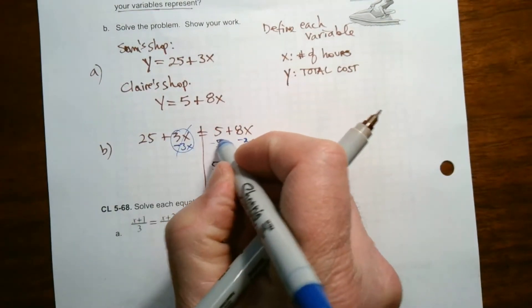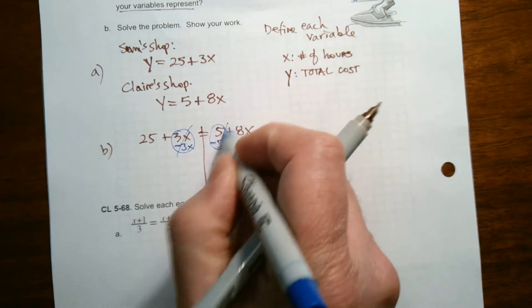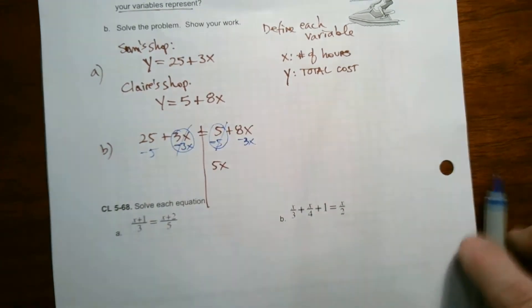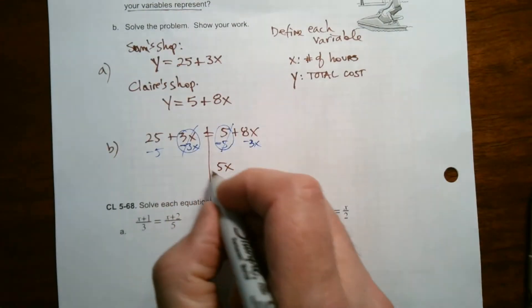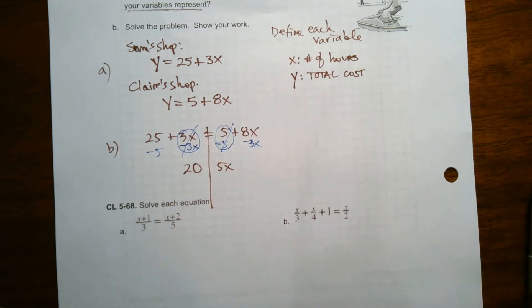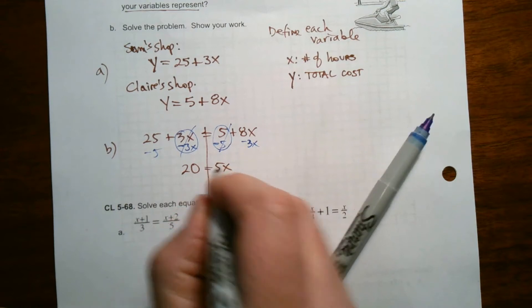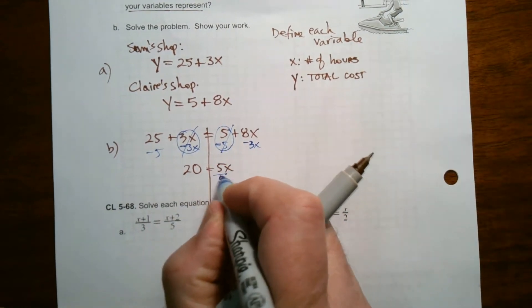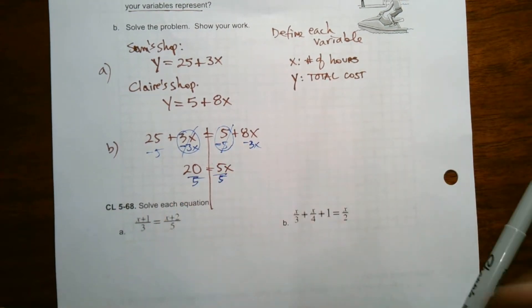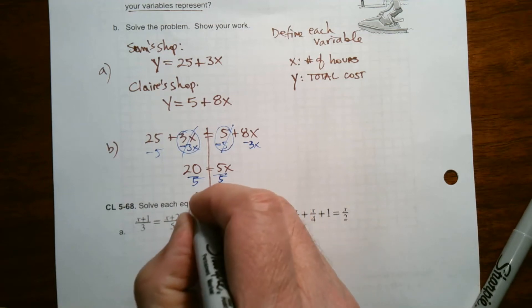And then I'll do the same with the numbers, the constants. If I subtract five from this side to make it all the constants over here, that would make that a 20. So I have 20 is equal to five X. And then it's just, oops, equal. So then it's divide by the coefficient. So X equals four.